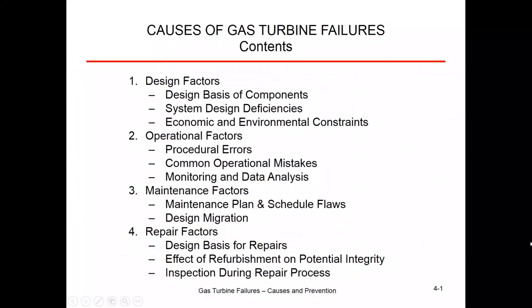Now we're going to look at causes of gas turbine failures — design factors, operational factors, maintenance factors, and repair factors — the things that make failures occur and what to look out for. If you understand these design and operational factors, when you're doing your operations you can keep these in mind and be extra vigilant. If you want to avoid failure, vigilance is key. You need to be looking out for potential problems. Crews that climb over gas turbines during maintenance and record every little gap and clearance are doing that to understand everything is just right, and so that if something goes wrong they know where it was before.